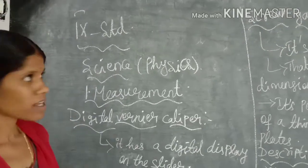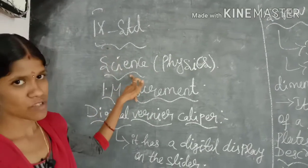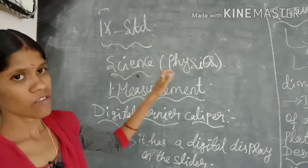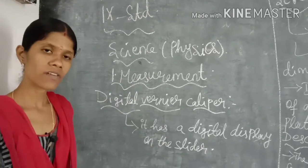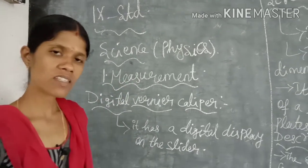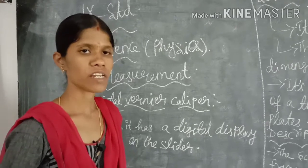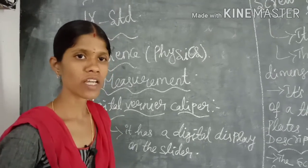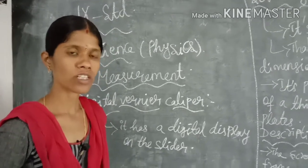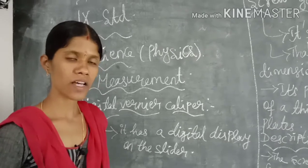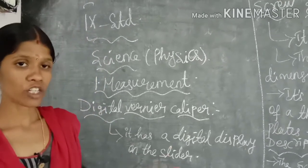Good morning students. This is the class for ninth standard science subject. In physics, our first lesson is measurement. In the last class we covered the vernier caliper, including least count, zero error, positive zero error, and negative zero error.